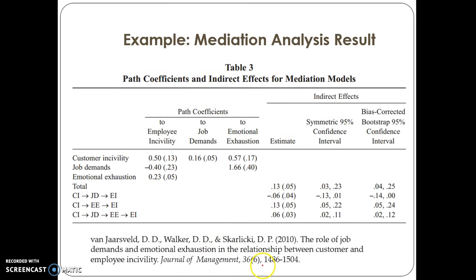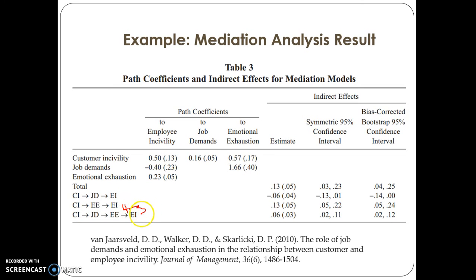Looking at the results part, they used Amos software for testing the mediation effect, but they tested the serial mediation effect using the Hayes method. If you see the direct effect, this is similar to any SEM or multiple regression result — these are all coefficient values and standardized coefficient values. In parentheses they reported the standard error values. Here this one is H2, this one is H3, and this one is H4.